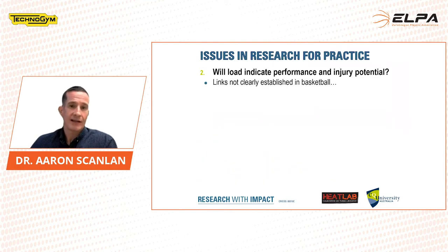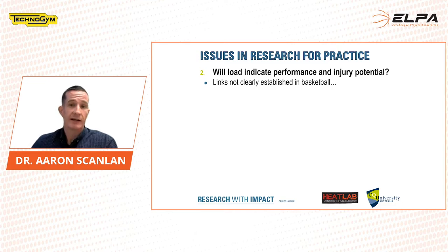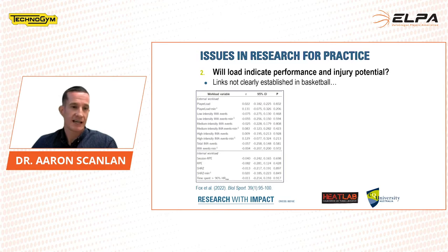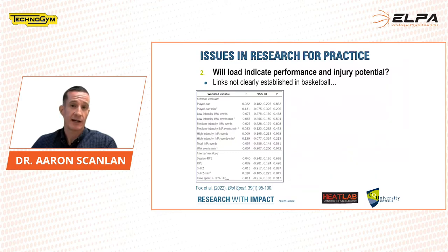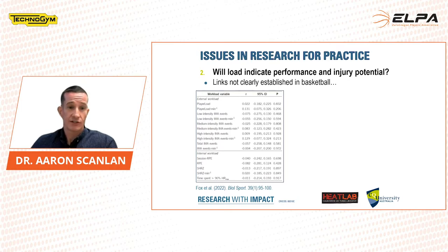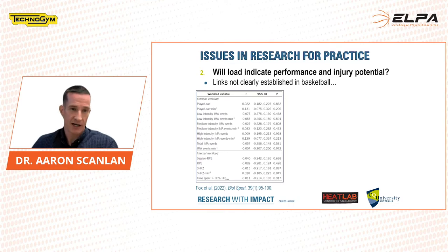Another issue emerging is whether load will indicate performance and injury potential. In theory, loads are used to optimally prepare players to make them physically ready for games and training, which should help performance and limit injury risk. But the links are not clearly established in basketball. We recently published work directly assessing relationships between acute load across the previous seven days before games, using a range of external and internal metrics with in-game statistics and the efficiency statistic. Results showed trivial to small relationships across all metrics, suggesting the acute load timeframes and metrics looked at didn't bear a large impact on actual performance.